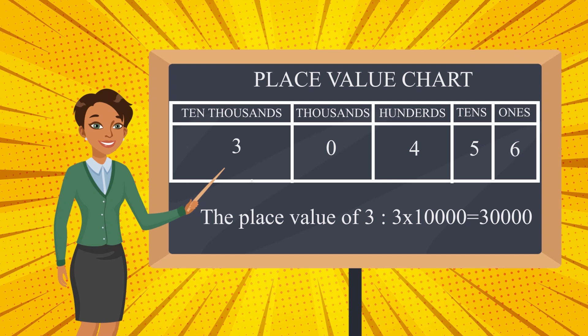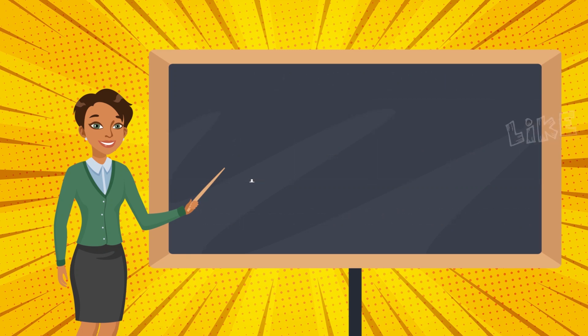In this way we find out the place value of any number by placing them in the place value chart. Always keep in mind that whenever you get a zero, the place value of that particular digit will always be zero.